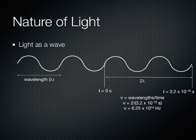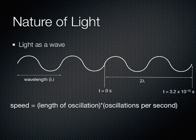The final and most important formula for light as a wave is that the speed of the wave is equal to the length of each oscillation multiplied by the number of oscillations per second. In other words, the speed of light is equal to the wavelength times the frequency. The speed of light is a constant equal to 3.00 times 10 to the 8th meters per second.